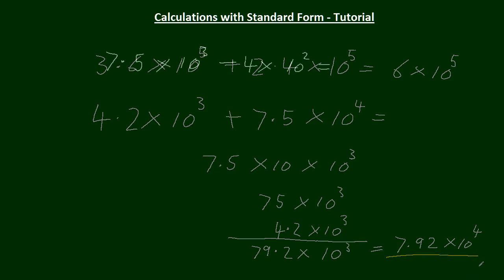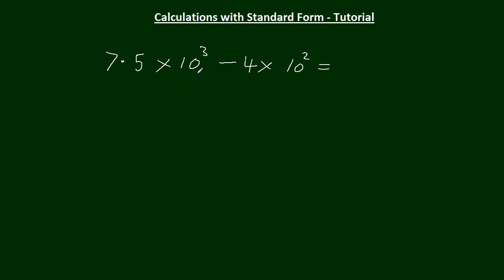On to subtraction now. 7.5 times 10 to the 3 minus 4 times 10 squared. We'll change this one to squares, so we'll make that 75 times 10 squared. I had to move the decimal point one place this way. Minus 4 times 10 squared. 4 from 75 equals 71 times 10 squared. This number here must be between 1 and 10, so it has to be 7.1 times 10 to the... Because I moved the decimal point once this way, I've got to increase that by 1.